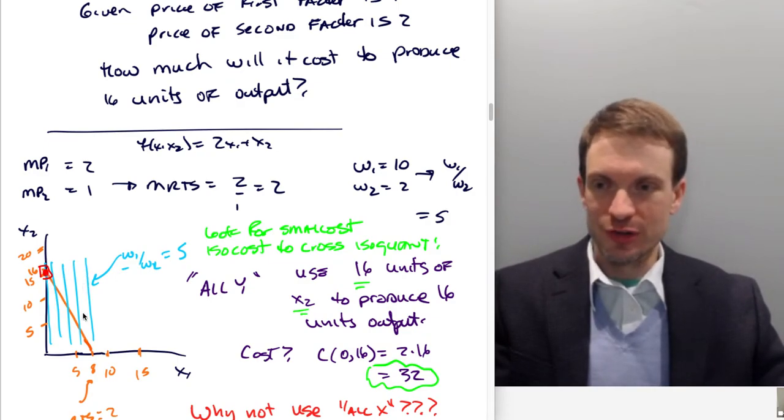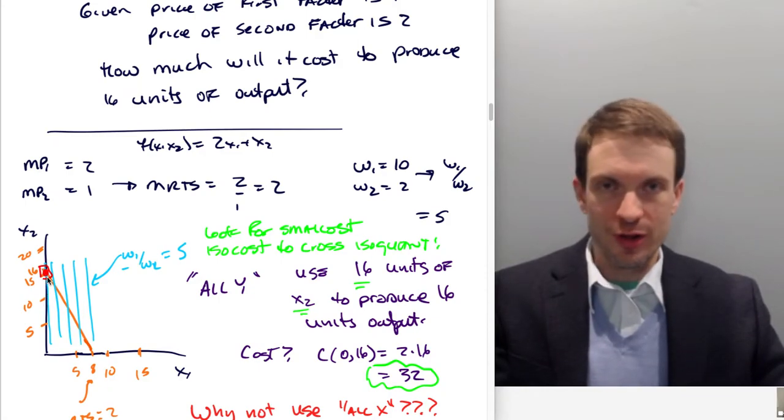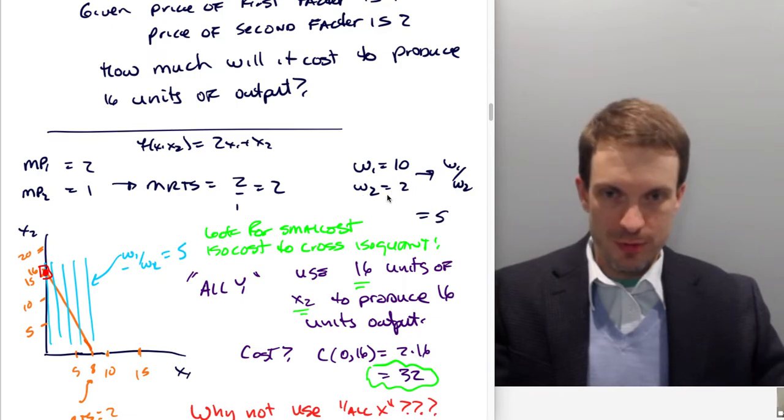And if we use only factor 1, we'll use 8 units of factor 1, and we'll still get 16 units of output. So I've actually kind of drawn this carefully. And then my isocosts are going to, I drew those less carefully, we'll just say they have a slope of 5. Staring at this for a second, wait a second, isocosts are steeper than the isoquant. This means that the smallest isocost is definitely going to hit on the vertical axis. And so we are going to use only x2. This is like our alley solution. So we're going to use 16 units of x2 to produce 16 units of output.